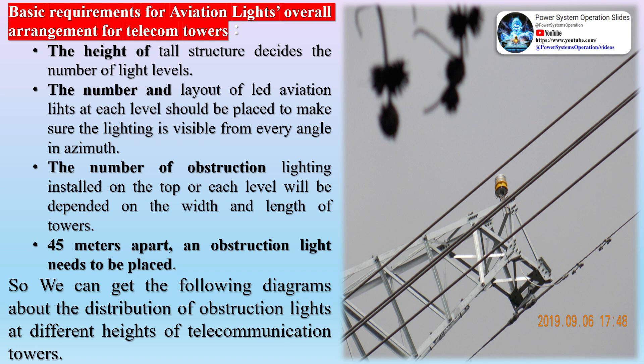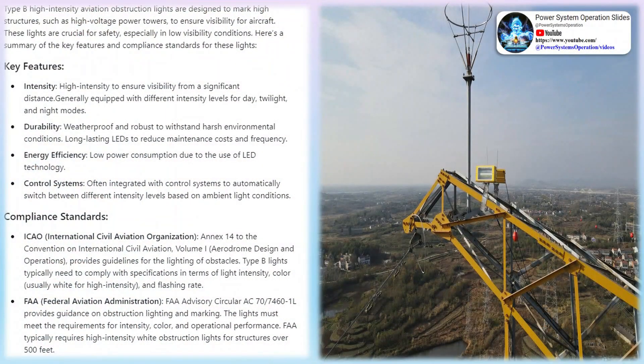For example, buildings and facilities above 45 meters are equipped with multi-layer medium- or high-intensity obstruction lights, and low-intensity obstruction lights can be set between them. The low-intensity obstruction light is red with an effective light intensity of 100 candelas ±25%. Medium-intensity aviation lights are generally used for tall structures ranging from 45 meters to 150 meters in height.